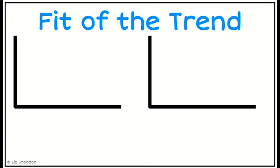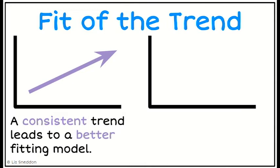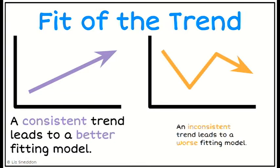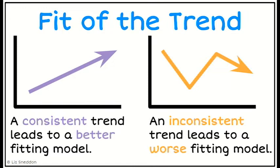Next we want to think about the trend and ask ourselves: has the trend been consistent? Is it steadily going up, steadily going down, or pretty stable? If we've got a pretty consistent trend, the model is going to be easier to fit and therefore will fit better. However, if our trend changes — a piecewise function changing during the time period — that's going to lead to a model that doesn't fit as well, because there's a delayed reaction to the trend changing.